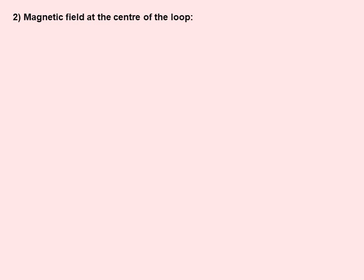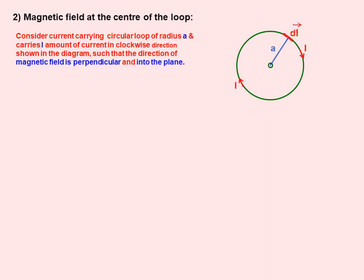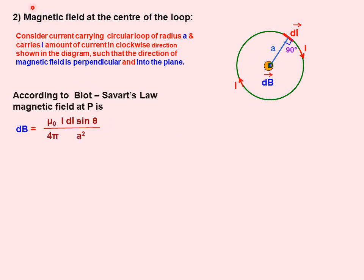Now we discuss the second application of Biot-Savart's law: the magnetic field at the center of the loop. Consider a current-carrying circular loop of radius A, made by a metallic conductor like copper, which carries I amount of current in the clockwise direction, as shown in the figure.